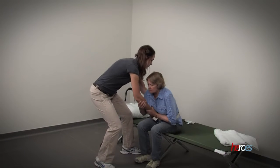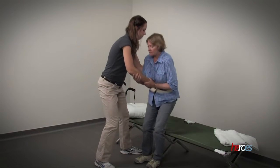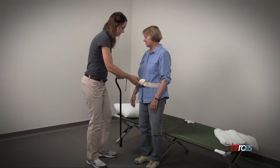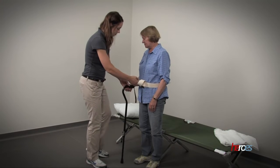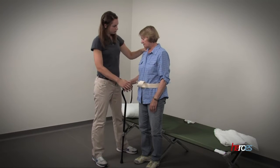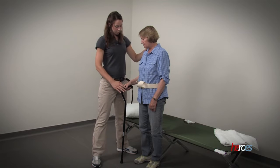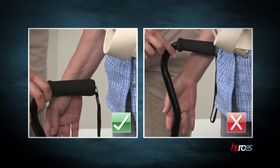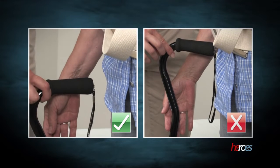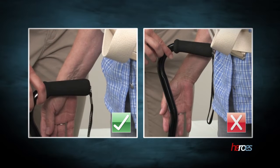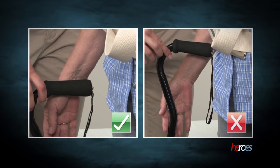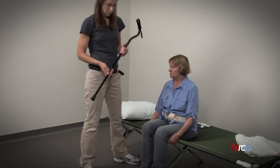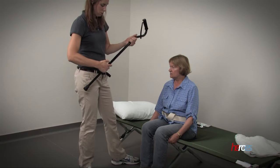Fitting a cane is much like fitting a walker. Make sure that the individual is standing up straight with their shoulders relaxed. Ask the individual which hand they normally hold the cane in. With their hand at their side, the individual's wrist crease should fall at the level of the handle. As with the walker, the height can be adjusted using the push pins on the leg.